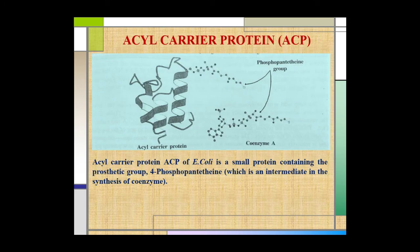Acyl carrier protein. The acyl carrier protein, abbreviated as ACP, of E. coli is a small protein containing the prosthetic group 4-phosphopantetheine. This 4-phosphopantetheine group is the prosthetic group of ACP, and it is an intermediate in the synthesis of coenzyme A.